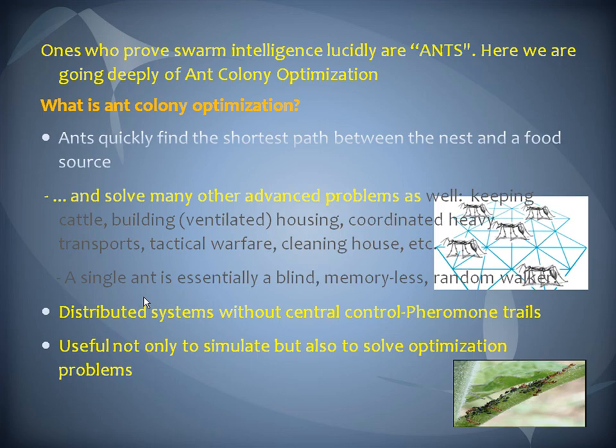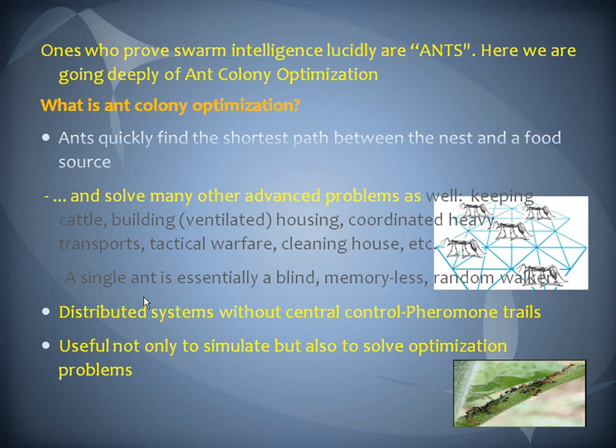The ones who prove swarm intelligence most clearly are ants. Here we go deeply into Ant Colony Optimization. Ants quickly find the shortest path between a nest and a food source. Ants solve many other advanced problems as well, such as keeping cattle, building housing, cleaning housing, and tactical warfare. A single ant is essentially blind, memoryless, and a random worker. One single ant cannot live alone, and there is no boss.